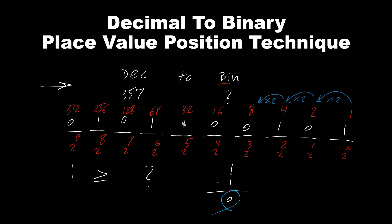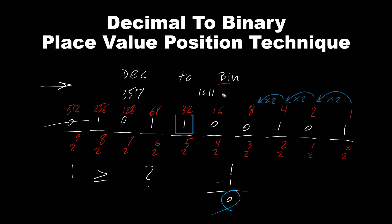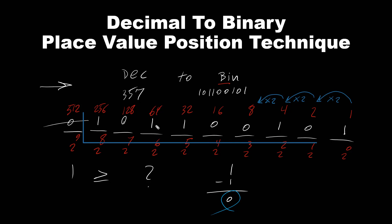So this is our binary number for this decimal value. Zeros to the left don't count. So 357 decimal is equivalent to 101100101 in the binary system.